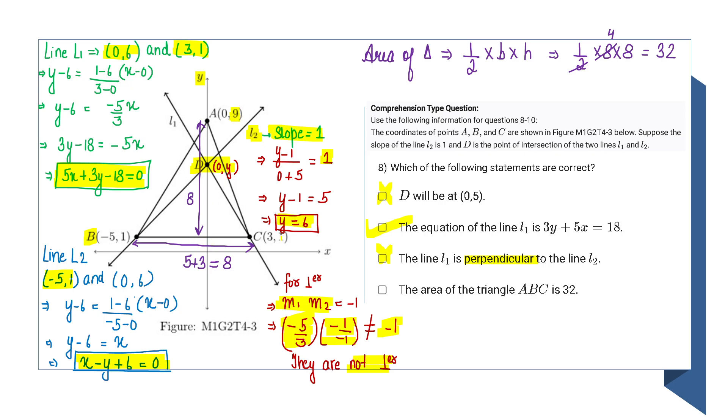What will be my perpendicular height? It will be the y-coordinate of A minus the y-coordinate of C, that is 1. The whole line is 9, but I only need this portion, so that will be 9 - 1. My height will be 8.